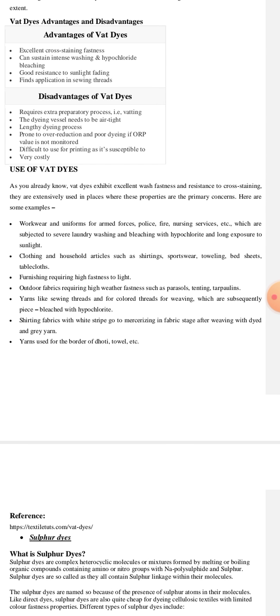Now, talking about some of the uses of vat dyes. Vat dyes exhibit excellent wash fastness and resistance to cross-staining. They are extensively used in places where these properties are the primary concerns. For example, workwear and uniforms for armed forces, police, fire, nursing services, which are subjected to severe laundry washing and bleaching with hypochlorite and long exposure to sunlight. Then clothing and household articles such as shirtings, sportswear, toweling, bedsheets, tablecloths.